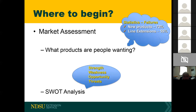The other type of failure deals with line extensions — products that already exist where you're just adding a new flavor. A good example would be Rice-A-Roni coming out with a new flavor the next year, or Lay's potato chips adding a new chip flavor. As expected, line extensions fail less often than entirely new products.